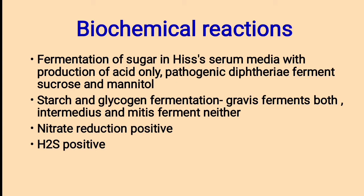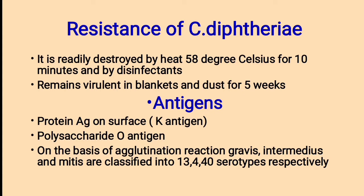Diphtheria reduces nitrate and utilizes H2S. Resistance: Corynebacterium diphtheriae is readily destroyed by heat at 58 degree Celsius for 10 minutes and by disinfectants, but remains virulent in blankets and dust for 5 weeks. On its surface it forms a protein antigen known as K antigen and polysaccharide O antigen. On the basis of agglutination reaction, Gravis, intermedius, and mitis are classified into 13, 4, and 40 serotypes respectively.